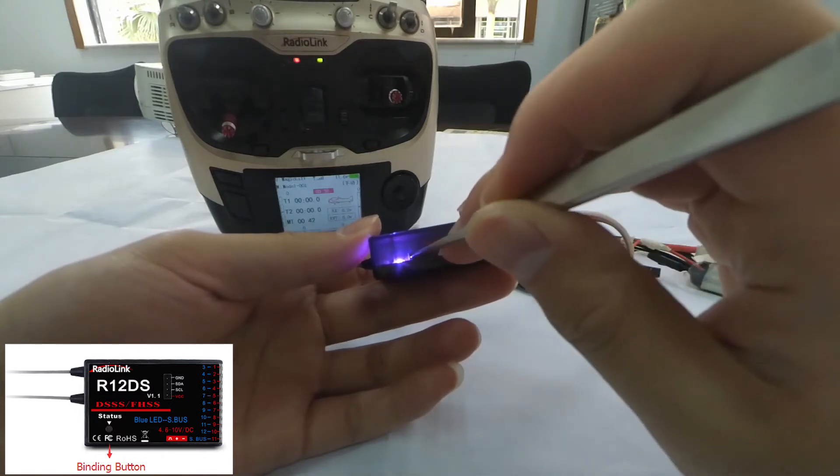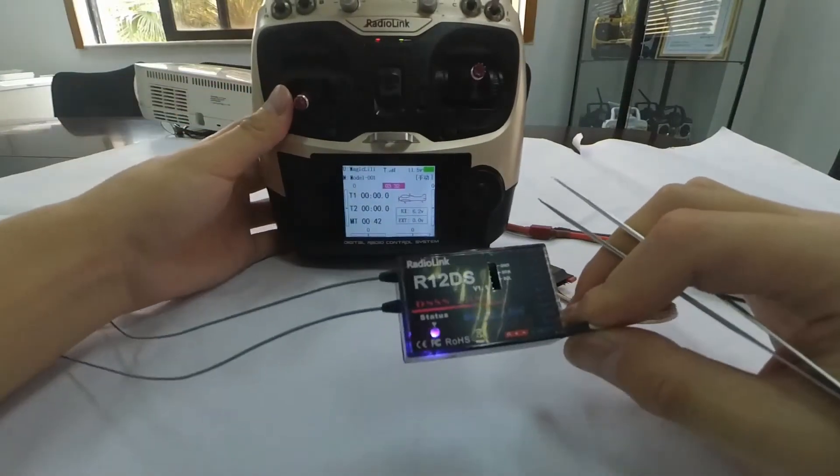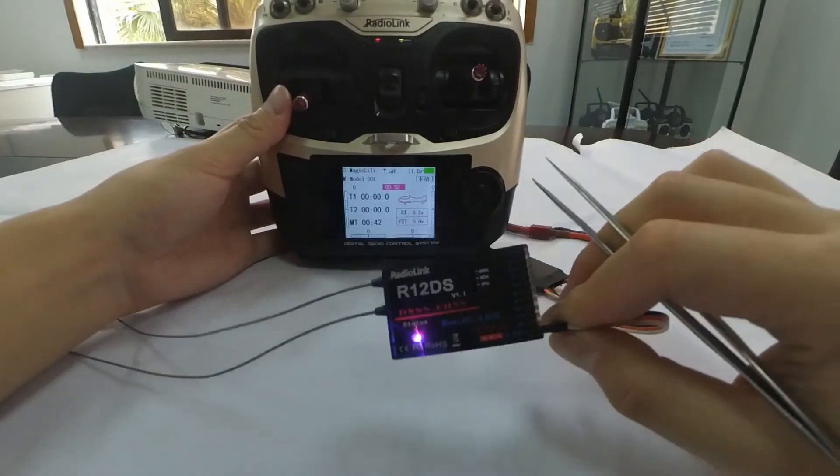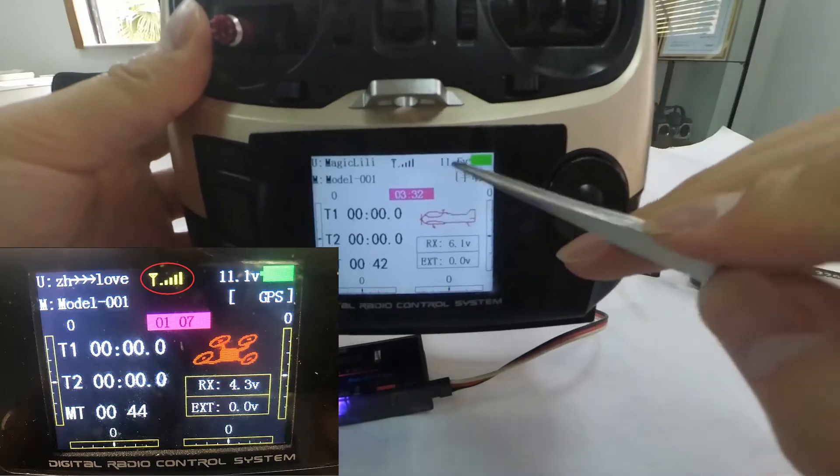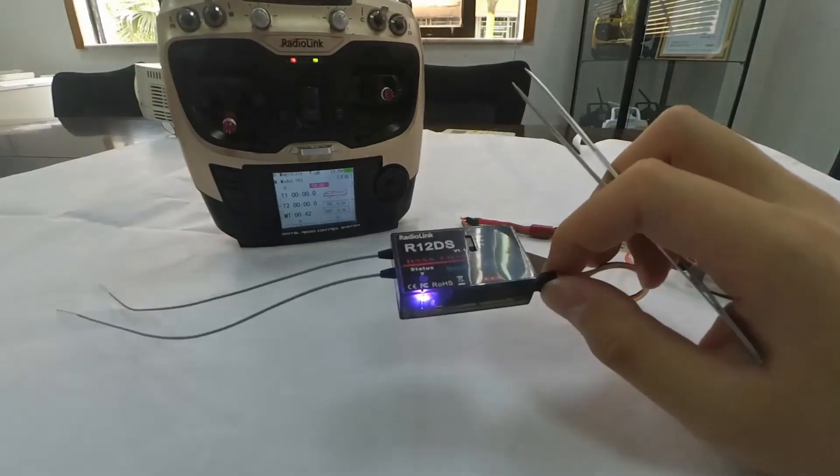So now let's press the binding button. When the LED stops flashing and is always on, we can see that a signal tower shown on top of the LCD screen of the transmitter. Binding is complete.